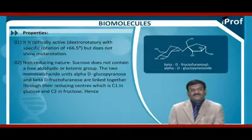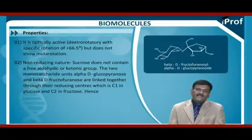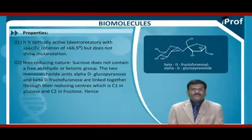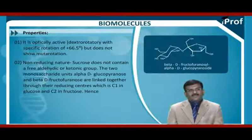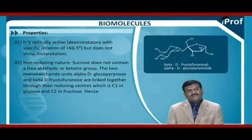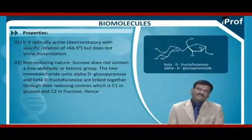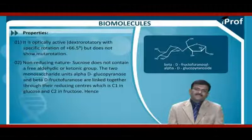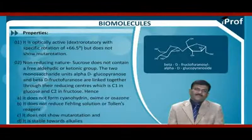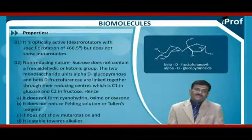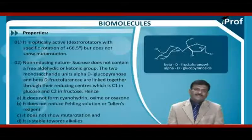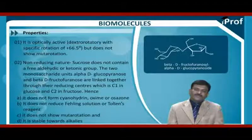Non-reducing nature of sucrose: Sucrose does not contain a free aldehyde or ketonic group. The two monosaccharide units, alpha-D-glucopyranose and beta-D-fructopyranose, are linked together through their reducing centers — C1 in glucose and C2 in fructose. Hence, it does not form cyanohydrin, osazone, or phenylosazone. It does not reduce Fehling's solution or Tollens' reagent, and it does not show mutarotation.